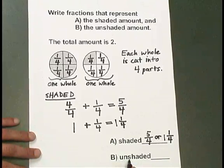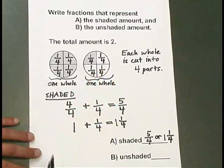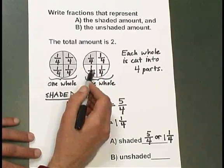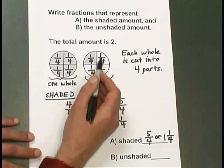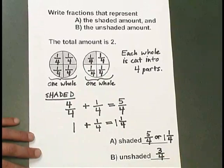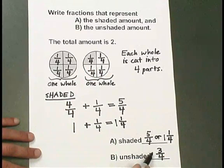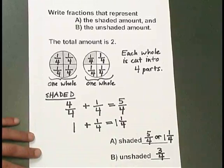For the unshaded portion, that consists of these three pieces of the second whole. That's 1, 2, 3 fourths. There's only one way to write that answer. 3 fourths is less than 1 whole, it cannot be written in a different way.